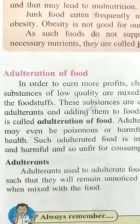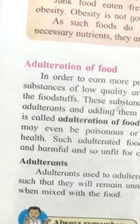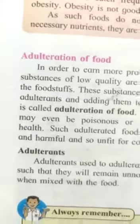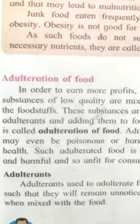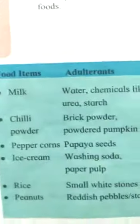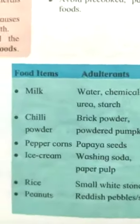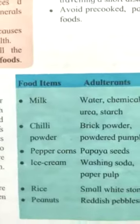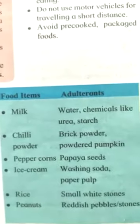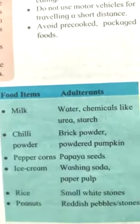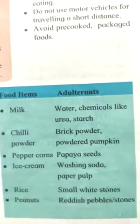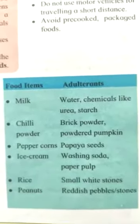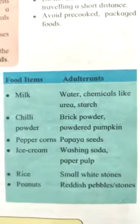Adulteration of food means the quality of a substance is reduced because something is mixed into it. In milk, water and chemicals like urea and starch are mixed. In chili, brick powder is mixed. In pepper corns, papaya seeds are mixed. In ice cream, washing soda and paper pulp are mixed. In rice, small white stones are present, and in peanuts, red-colored pebbles or stones are present.